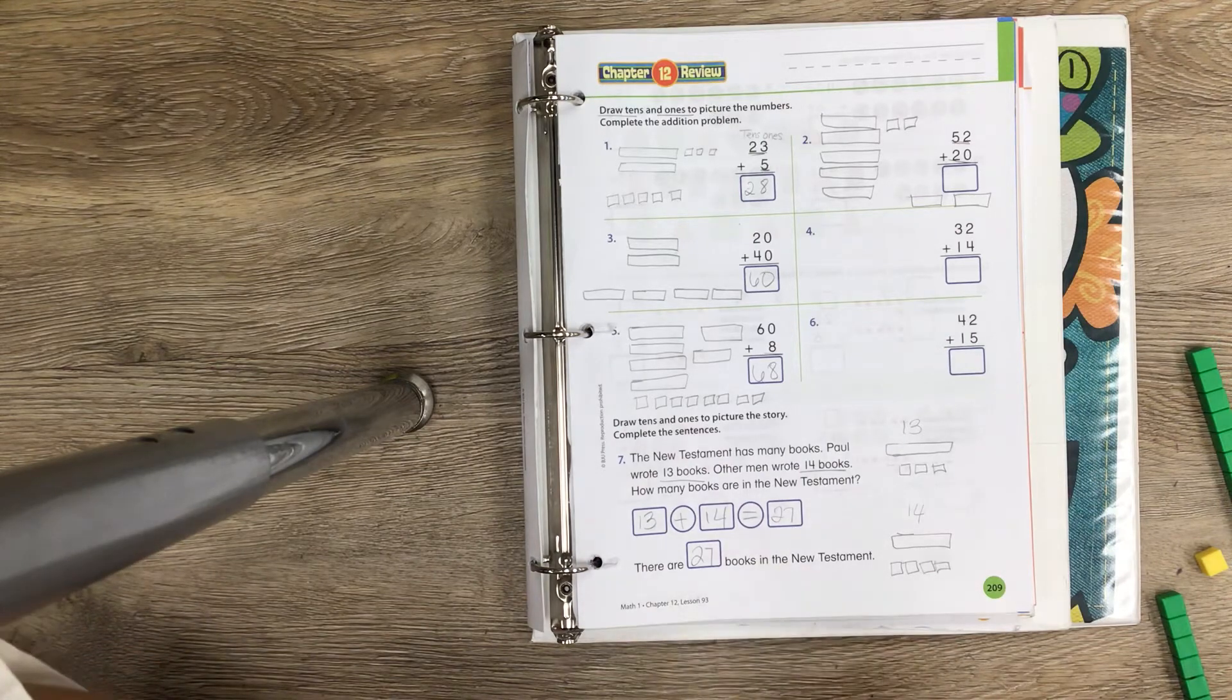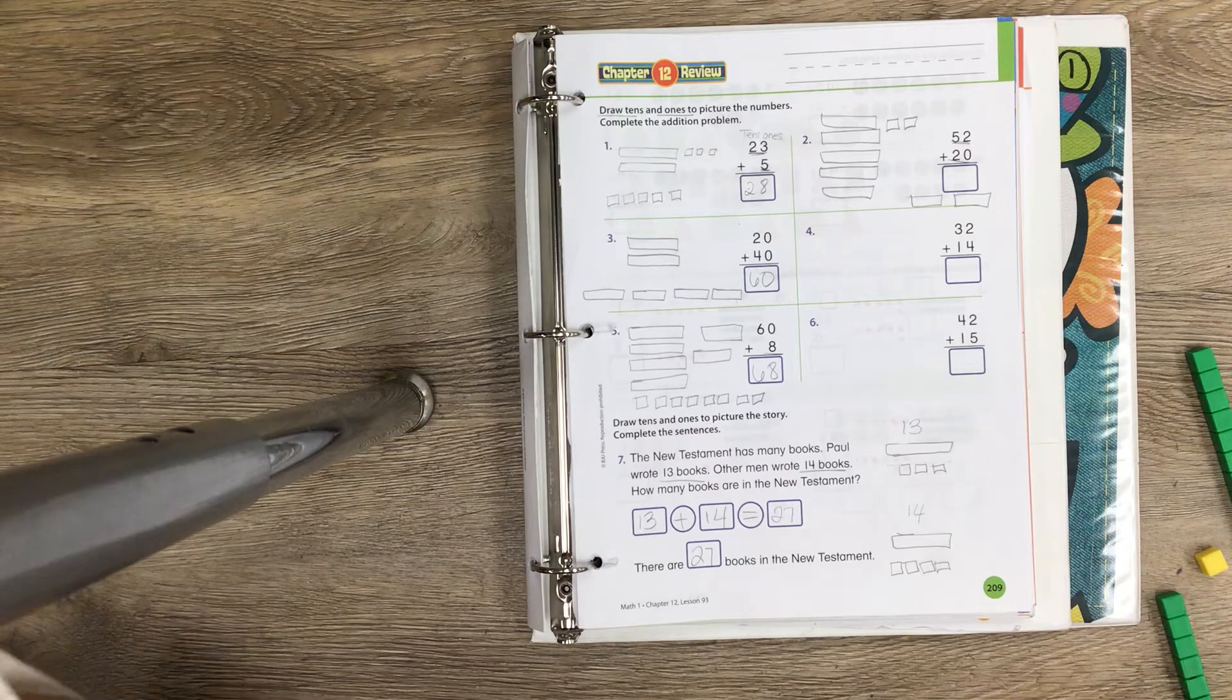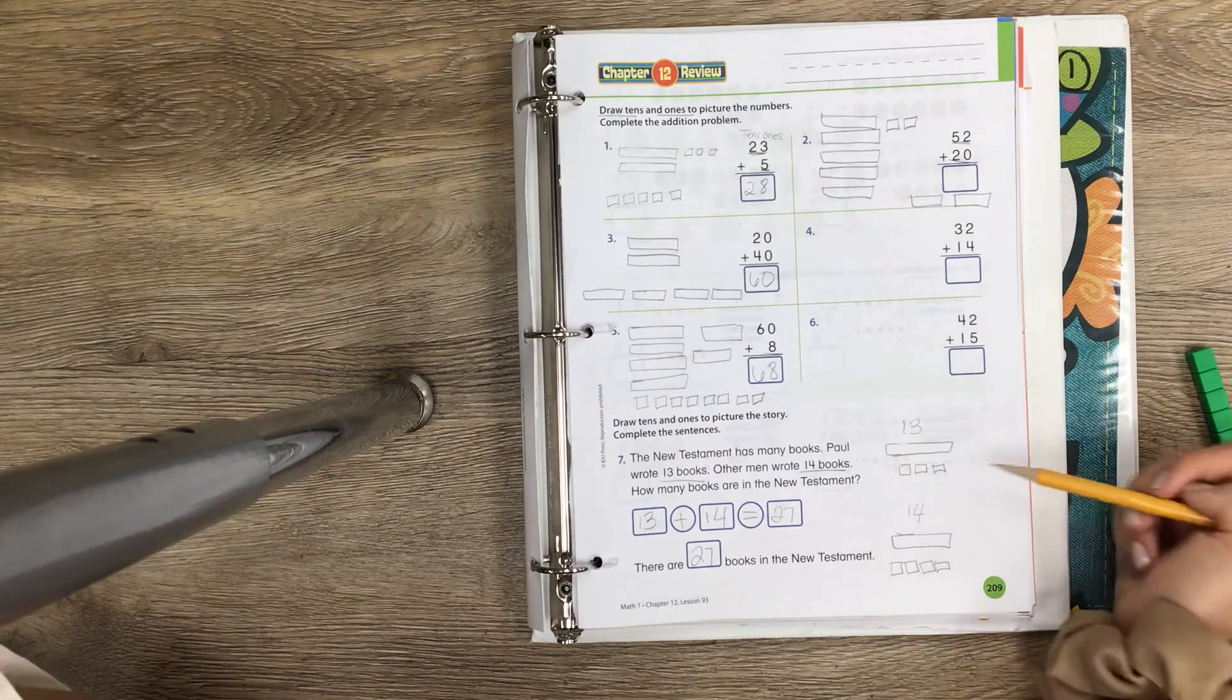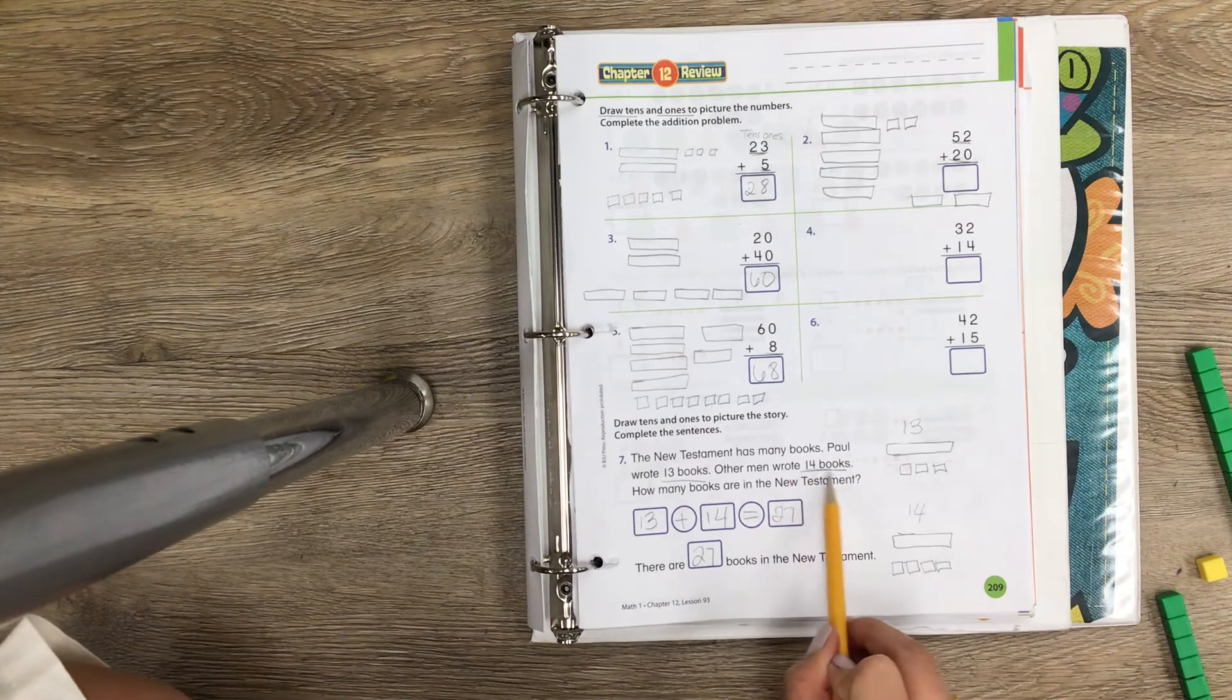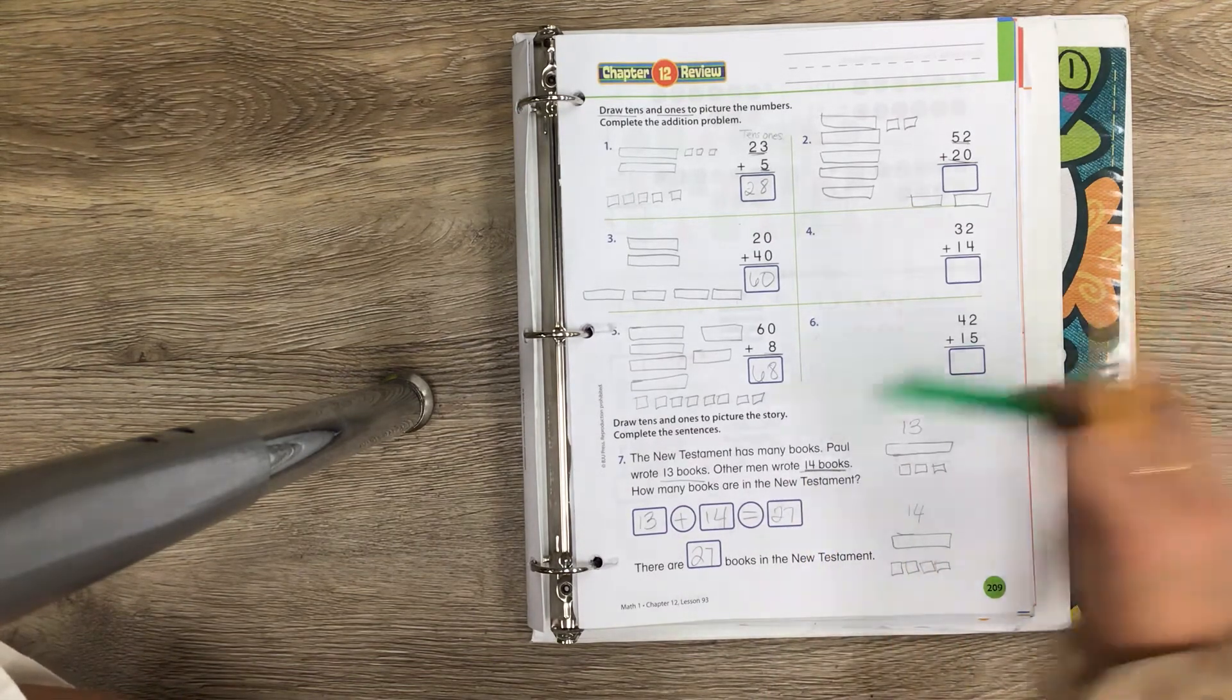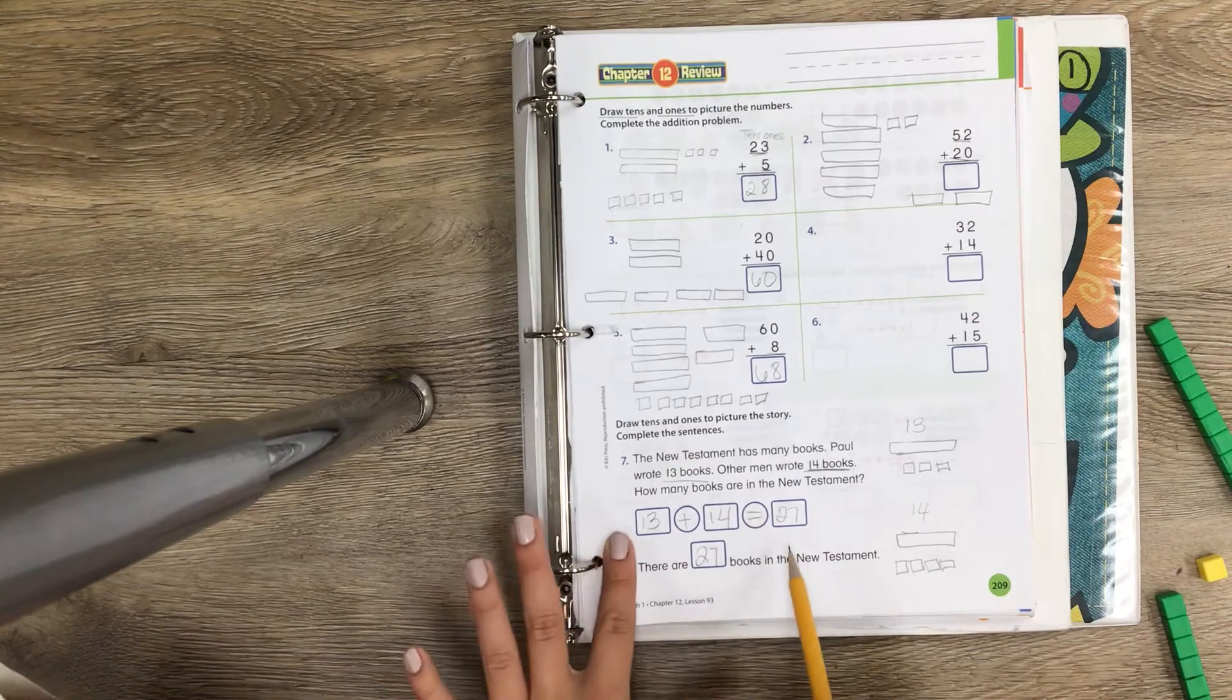Number 7: The New Testament has many books. Paul wrote 13 books, other men wrote 14 books. How many books are in the New Testament? So I made my 13, I drew it out: 10, 11, 12, 13. Then they wanted me to make 14, so 10, 11, 12, 13, 14.